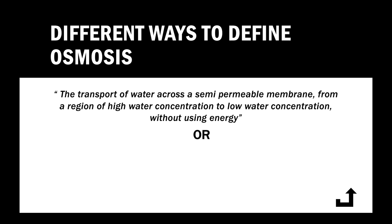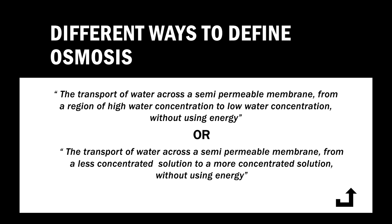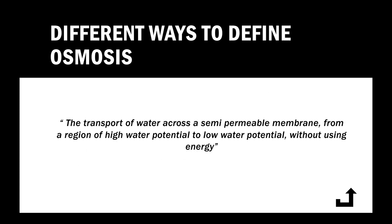Or you can define osmosis by comparing the solution's concentration: osmosis refers to the transport of water molecules across a semi-permeable membrane from a less concentrated solution — because a less concentrated solution has more water — to a more concentrated solution — because a concentrated solution has less water — without using energy. Or, since we have learned about the concept of water potential, we can also define osmosis by comparing water potential: osmosis refers to the transport of water molecules across a semi-permeable membrane from a region of high water potential to low water potential without using energy.